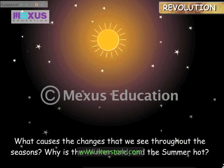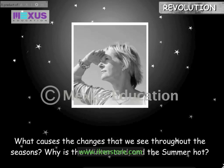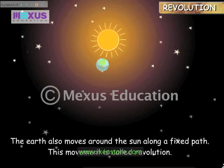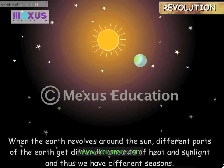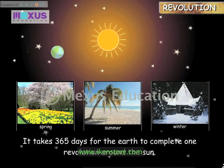What causes the changes that we see throughout the seasons? Why is the winter cold and the summer hot? The Earth also moves around the Sun along a fixed path. This movement is called revolution. When the Earth revolves around the Sun, different parts of the Earth get different amounts of heat and sunlight, and thus we have different seasons. It takes 365 days for the Earth to complete one revolution around the Sun.